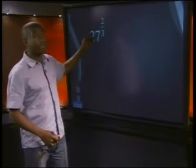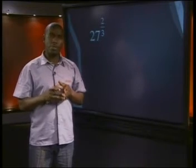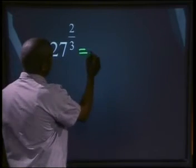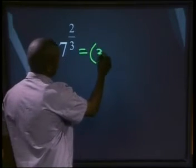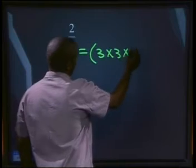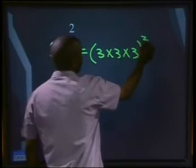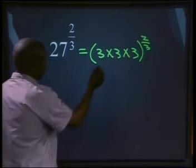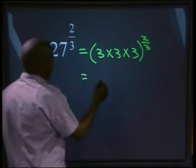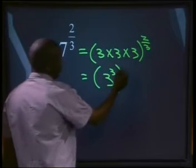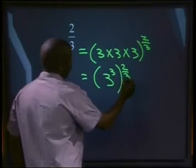What about 27 to the power of 2 over 3? We must prime factorize the base. Can you write 27 as a product of its prime factors? Let's see. 27 can be written as 3 times 3 times 3. This will be all to the power of 2 over 3. This will be the same as 3 to the power of 3, all to the power of 2 over 3.